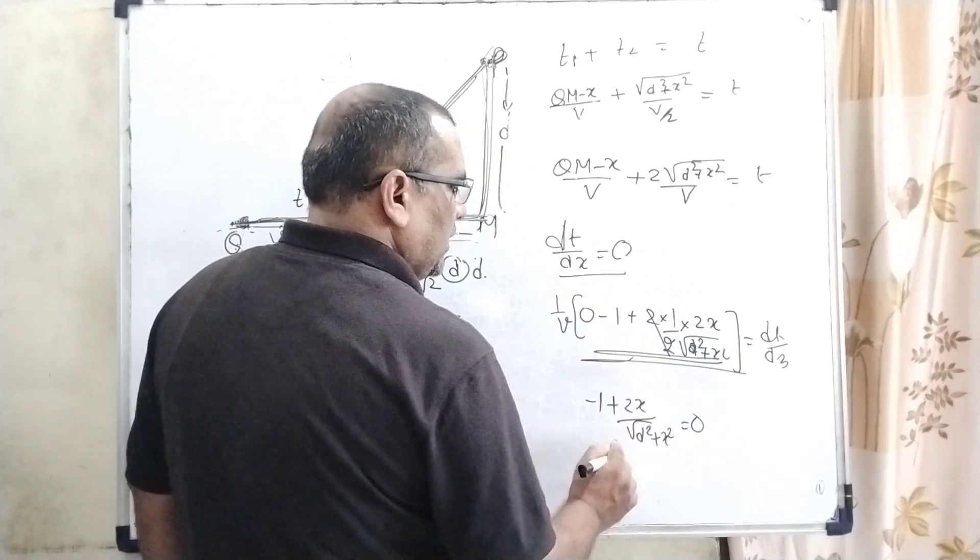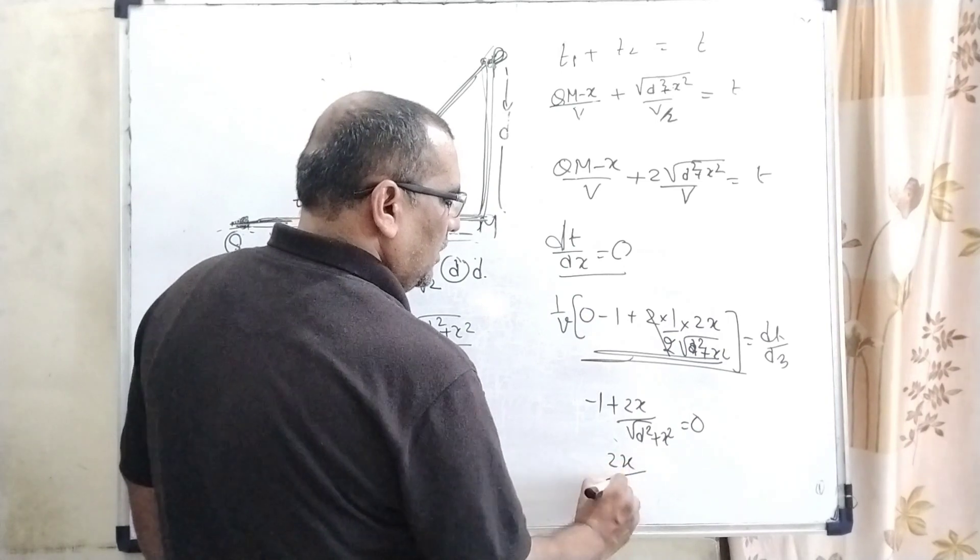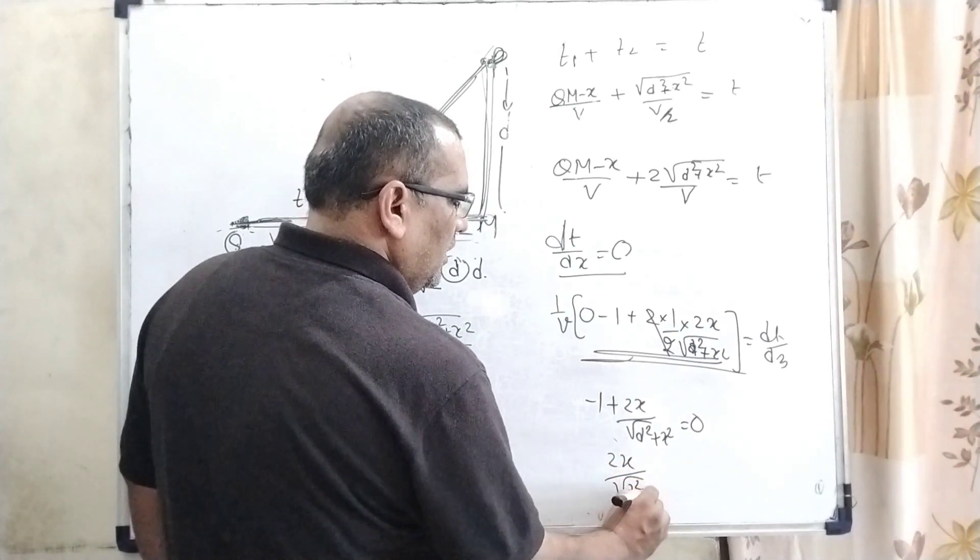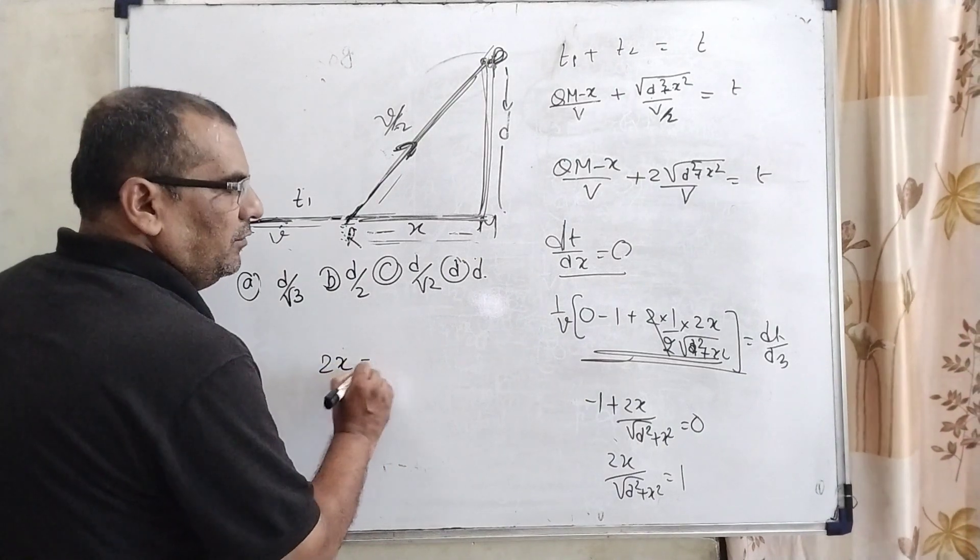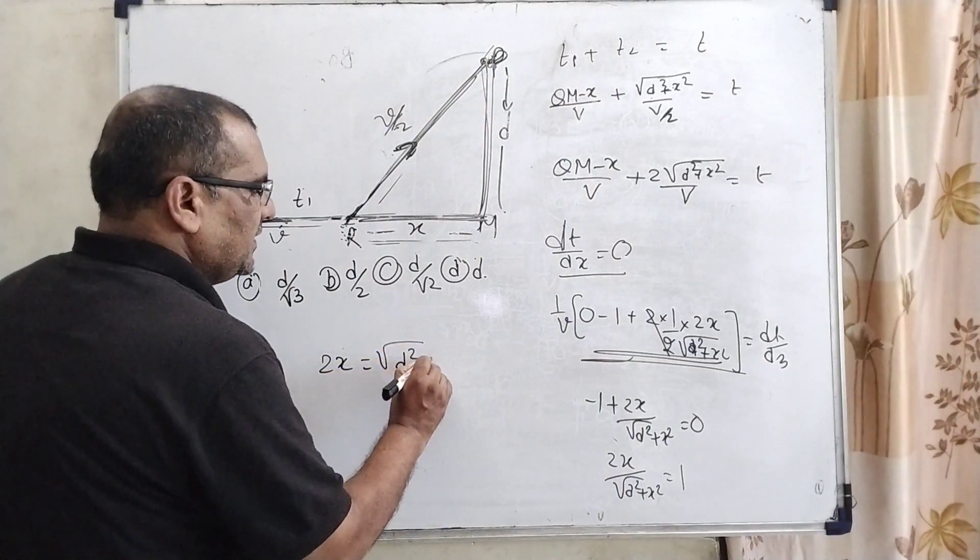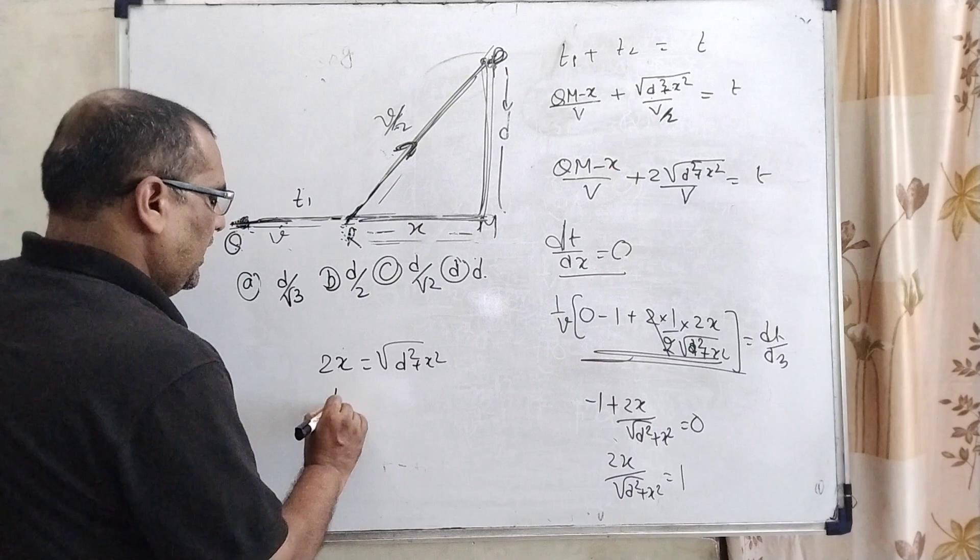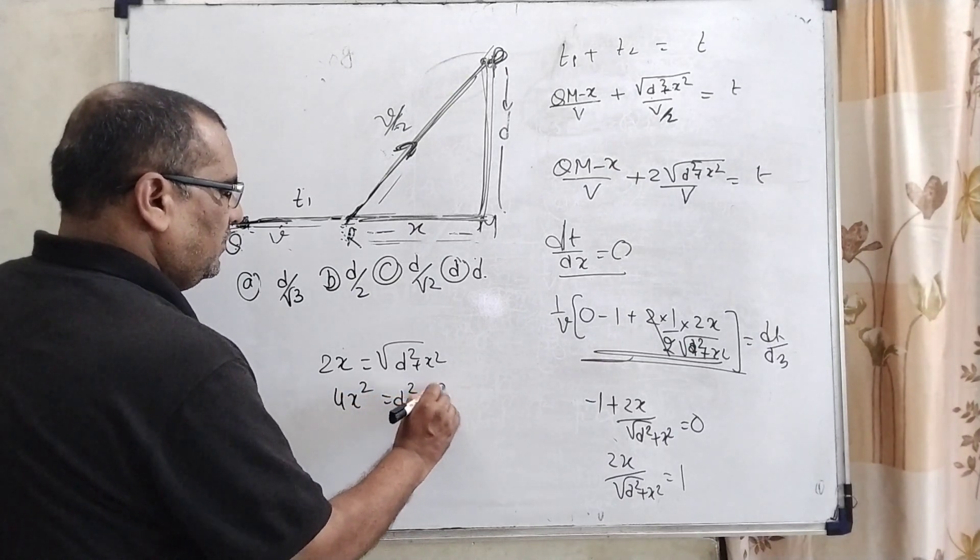So now, minus 1 is transposing to the right side, becomes plus. Now 2x equals root D square plus x square. Squaring both sides, 4x square equals D square plus x square.